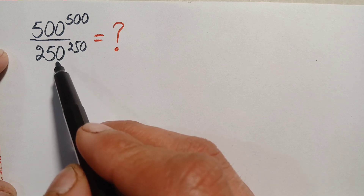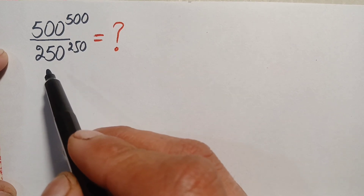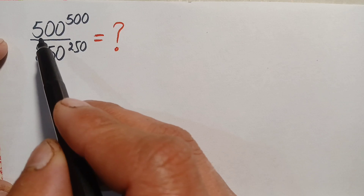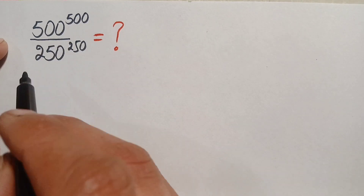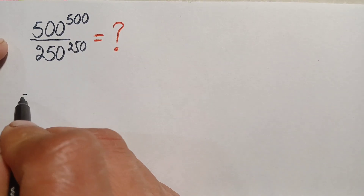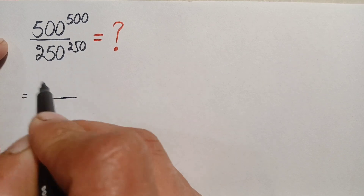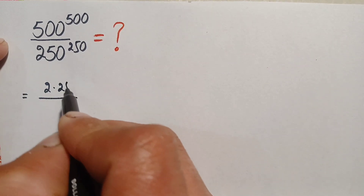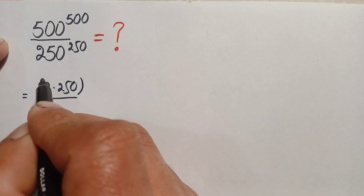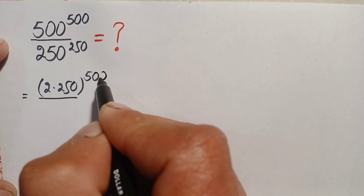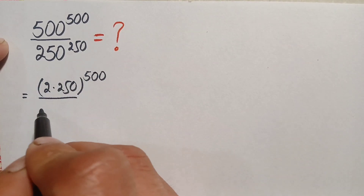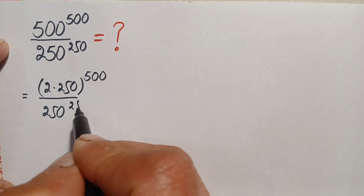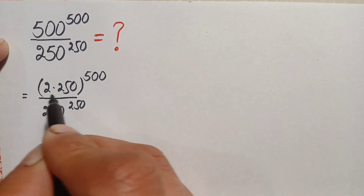In the first method, we will factorize the number 500. So 500 can be written as 2 times 250, giving us 2 times 250, raised to the power 500, divided by 250 raised to the power 250.